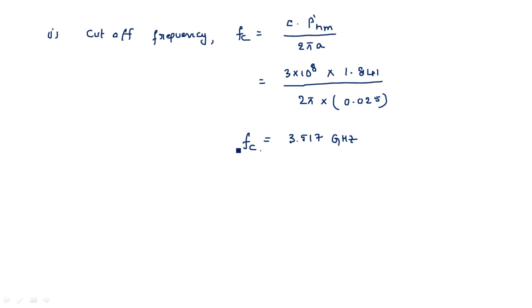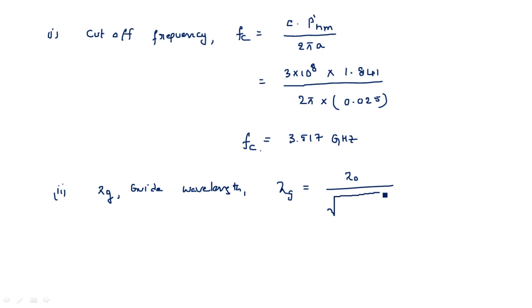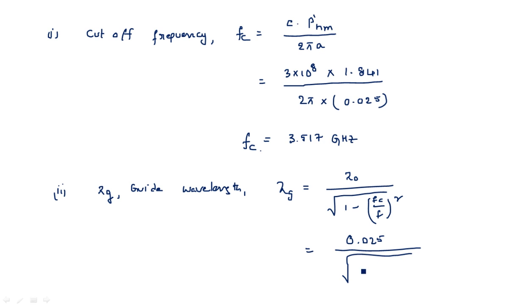Everything should be consistently written in meters — since c is in meters per second, the radius must also be converted to meters. Simplifying, we get fc equal to 3.517 gigahertz. Below this frequency no signal is transmitted through the waveguide. Now the second parameter is guide wavelength lambda g, where lambda g equals lambda-not divided by square root of 1 minus (fc/f) squared.